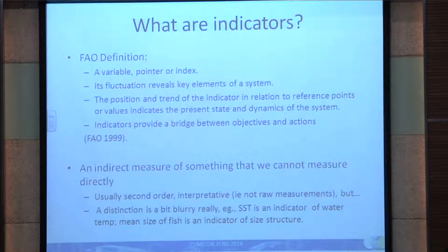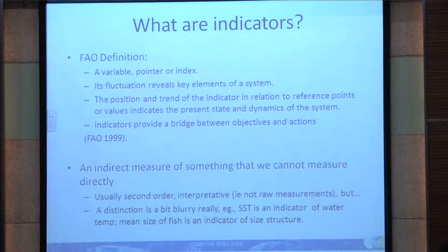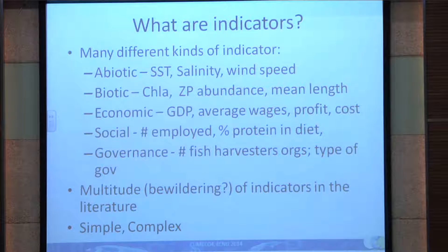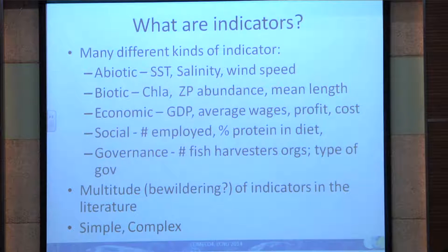Equally useful is to think of indicators as indirect measures — often a measure of something we can't measure directly. We're used to measuring temperature, salinity, nitrogen level, but there are some things that are less tangible. For example, thinking of fish communities, mean size in the community is more of an indirect measure of the size structure of that community. And of course there are many different types of indicators: from the abiotic world — sea surface temperature, salinity — to biotic, economic, social indicators, and indicators of governance including management.